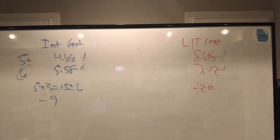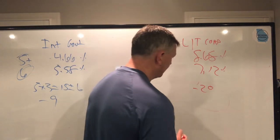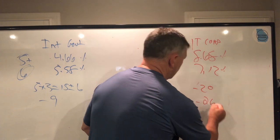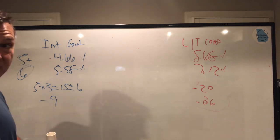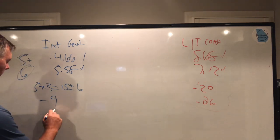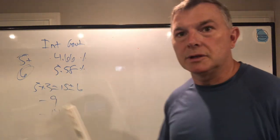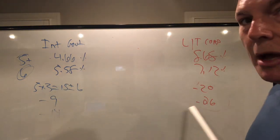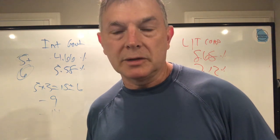Then 2022 came around. The long-term corporate bond fund was down 26%, and the intermediate government bond fund was down almost 14%. Both were down significantly more than the anticipated expected worst-case loss based on three standard deviations.